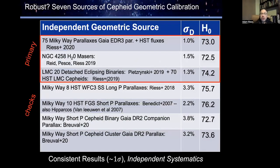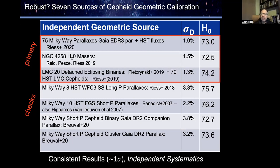Going over some tests of robustness: we can separate the result based on different ways of geometrically calibrating the distance ladder. The three primary geometric anchors, looked at individually, all give quite consistent values for the Hubble constant. We also have independent checks from other techniques used as cross-checks — less precise individually, but the result doesn't appear to come from the effect of any one of these anchors.